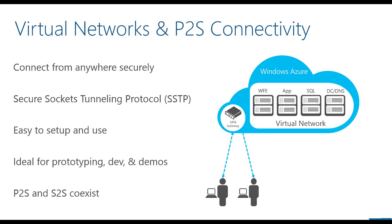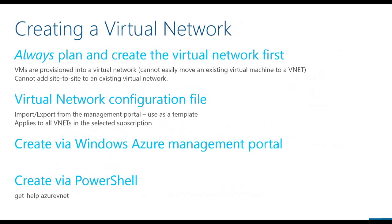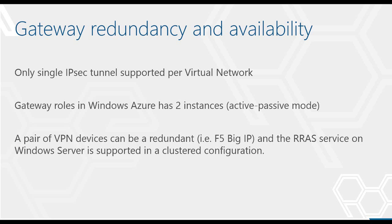A point-to-site configuration can coexist with most site-to-site configurations in the same virtual network. For site-to-site connectivity, Windows Azure Virtual Networks has a growing list of officially supported devices and software solutions, including the built-in Routing and Remote Access Service in Server 2012. Devices not on the official supported list likely will work as long as they support the required protocols and encryption schemes. When planning, you should deploy the network before deploying servers, since moving an existing virtual machine to a virtual network is not a simple process. Site-to-site networking must be enabled at the virtual network provisioning time, and currently only a single IPsec tunnel is supported per virtual network.